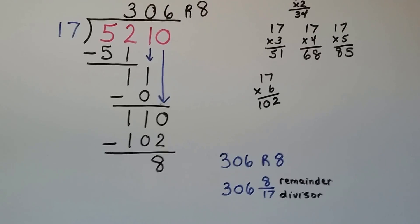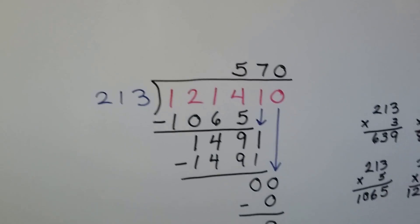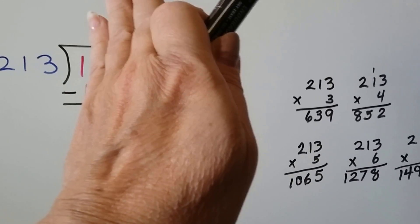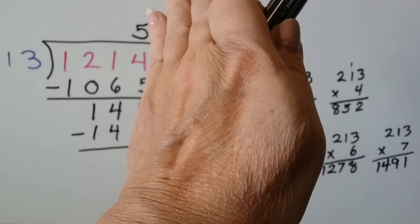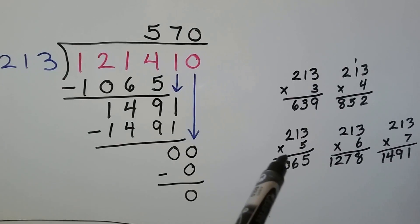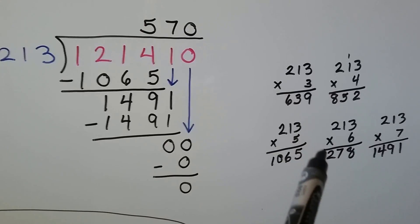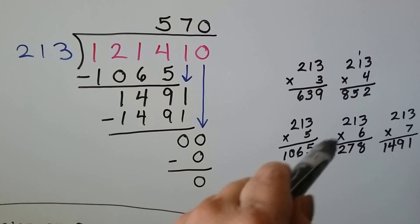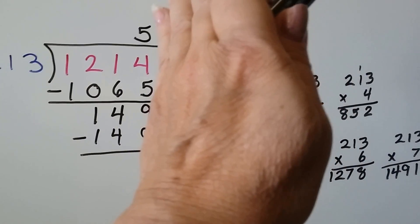For a three-digit divisor example, 213 cannot fit into 1, 12, or 121, so we try 1214. Doing the math on the side: 213 times 5 is 1065, and 213 times 6 is 1278 — that's too big. So it's a 5. We put the 5 above the 4, because 17 is going into 1214.